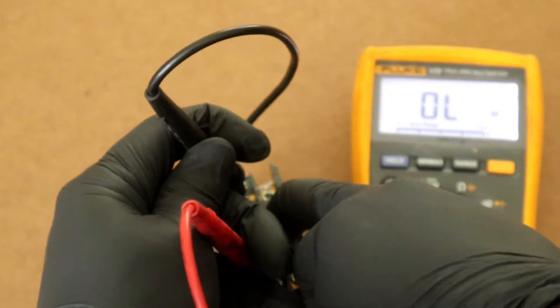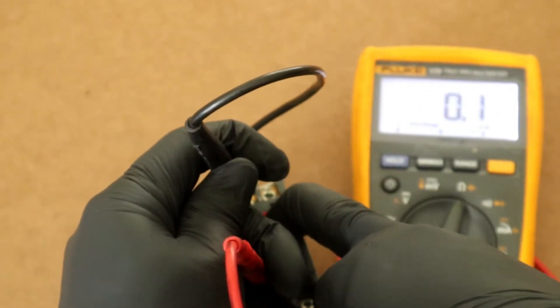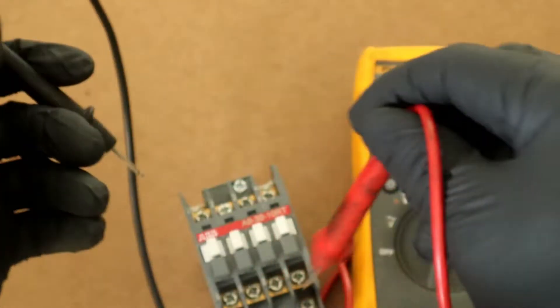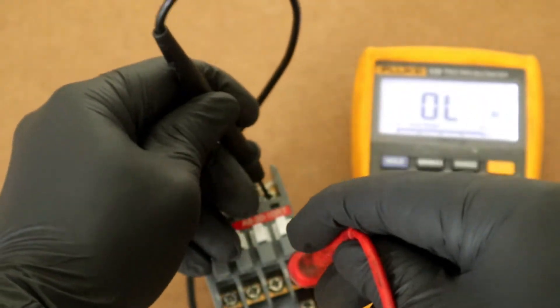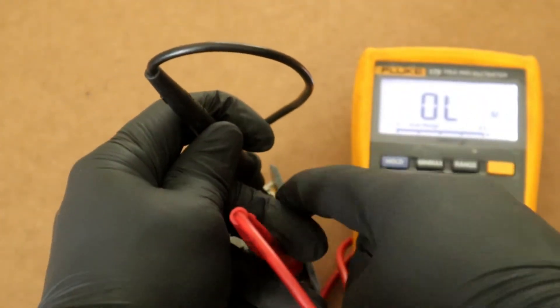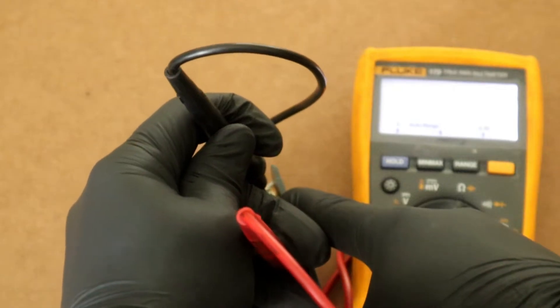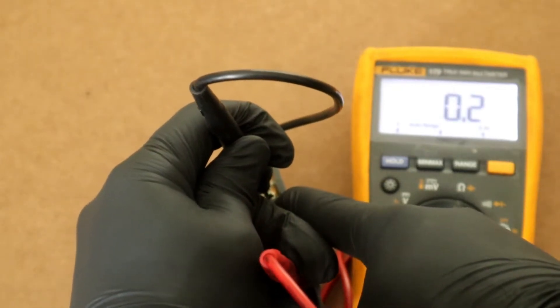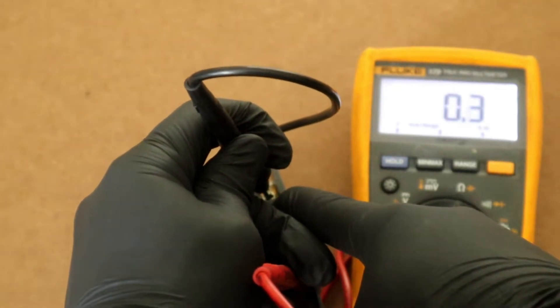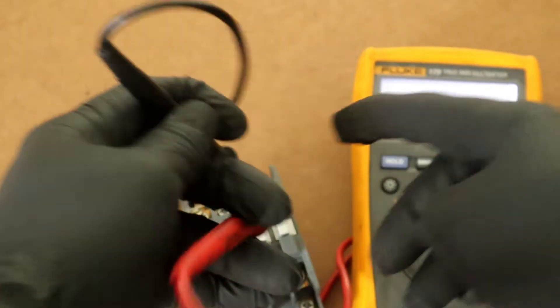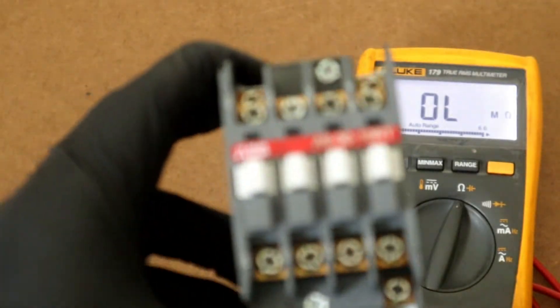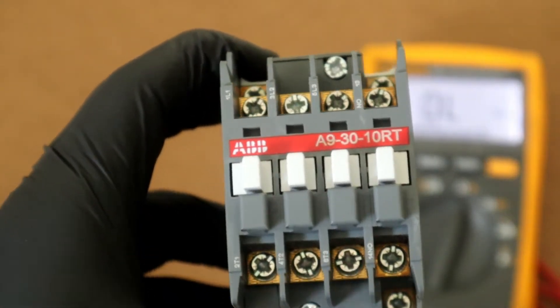L3 to T3, 0.1 ohm. So we are good so far. Now for our final contact test, we go across our normally open contact, manually depress spring, we have 0.2, 0.3 ohms. Our contactor is doing very good so far.